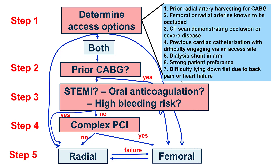In summary, both radial and femoral are important access options, and each has its advantages and disadvantages. The operator should be facile with both. The key steps are: first, determine if all options are available; previous bypass favors femoral; STEMI and high bleeding risk favor radial; complex PCI generally favors femoral; and if either approach fails, switching to the alternate approach is preferred. Thank you.